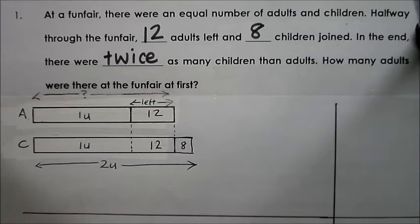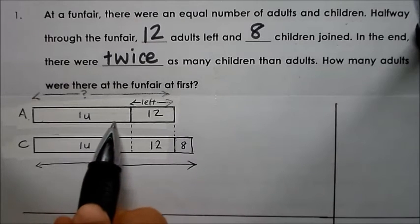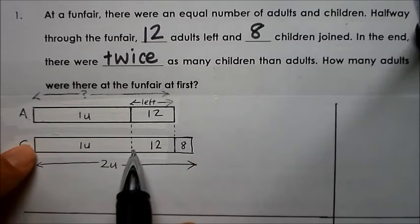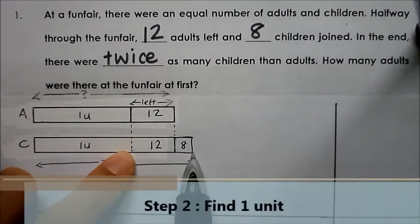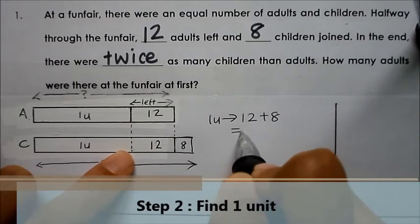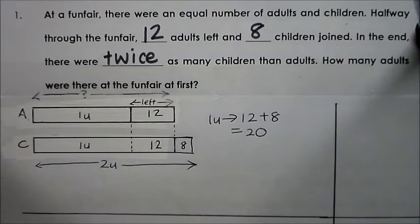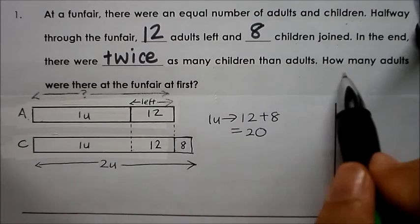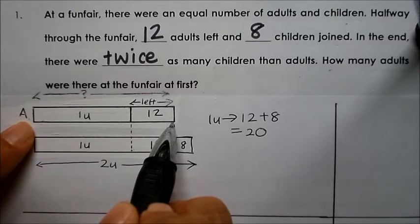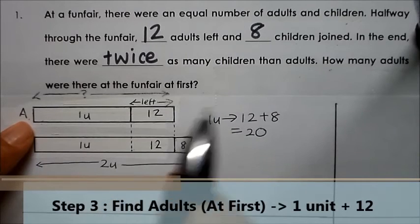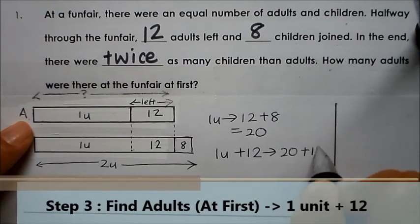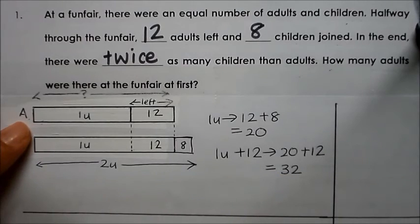Remember, in the end there were twice as many children than adults. So if this is one unit of adults left, and this is two units of children in the end, if this is one unit, then here will also be one unit. So one unit is actually 12 plus 8, which equals 20. So one unit equals 20. The number of adults at the fun fair at first is one unit plus 12, which is 20 plus 12, equal to 32.